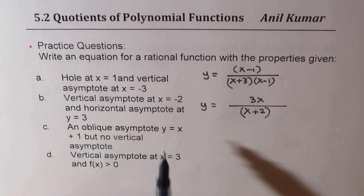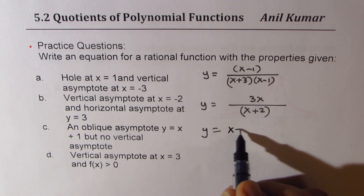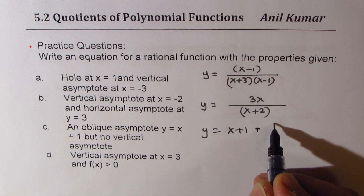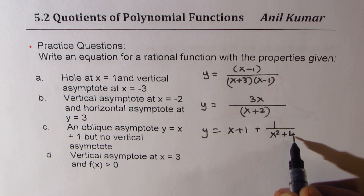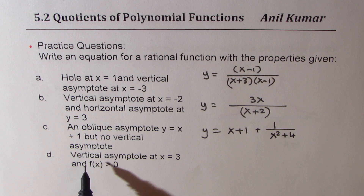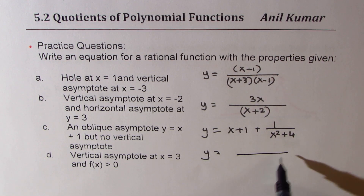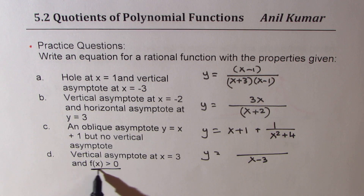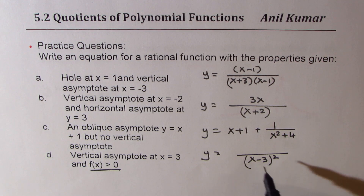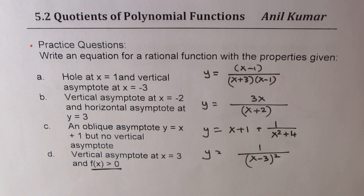For Part C — oblique asymptote given, no vertical asymptote — write y equals the oblique asymptote expression plus a term like 1 over (x squared plus 1); it could be x squared plus 4, it doesn't matter, both are correct. For Part D — vertical asymptote at x equals 3 and f(x) greater than 0 — x minus 3 is in the denominator, and since the function must be positive, squaring ensures that. Once you understand the concepts, it becomes that simple. Feel free to write your comments, share your views, like and subscribe — thanks for watching and all the best.